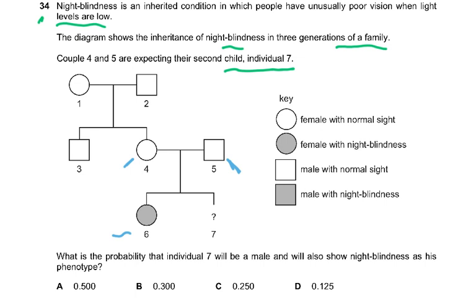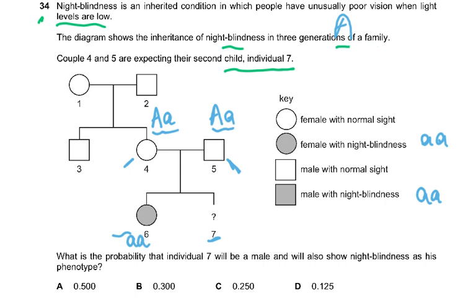When doing this question, we focus on parents 4 and 5 — they are normal but have an affected female child (6) with night blindness. We don't cover sex-linked disorders in this syllabus, so both parents must be heterozygous — one capital A and one small a. The cross is Aa × Aa, giving AA, Aa, Aa, and aa. There is a 25% chance of having night blindness.